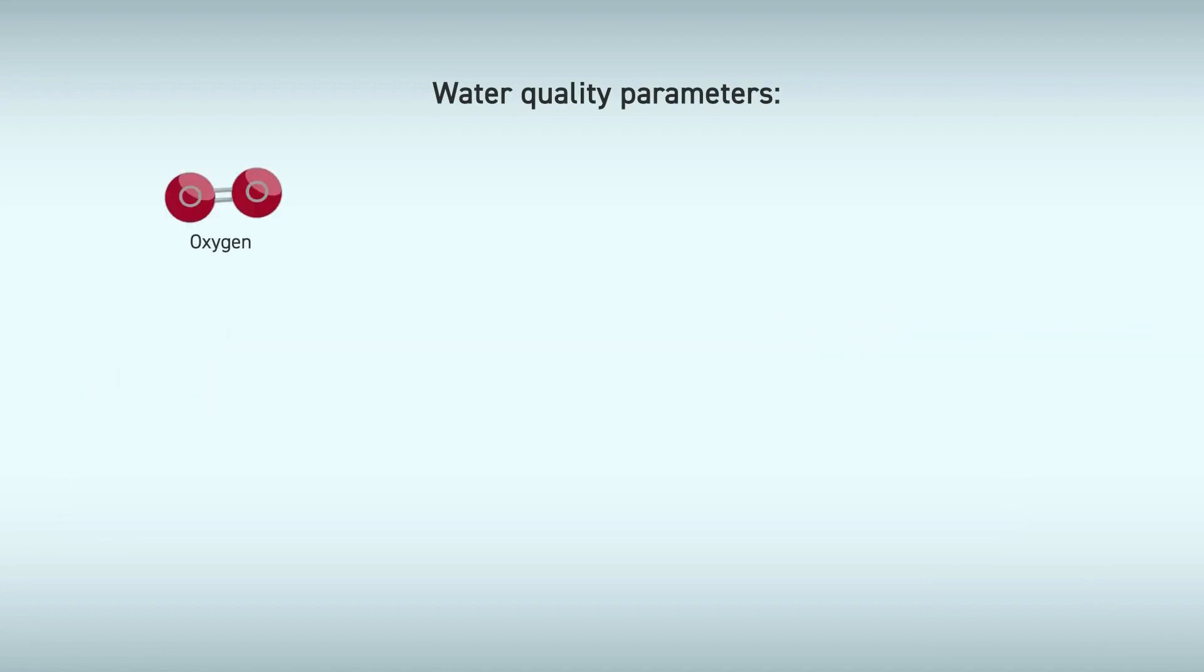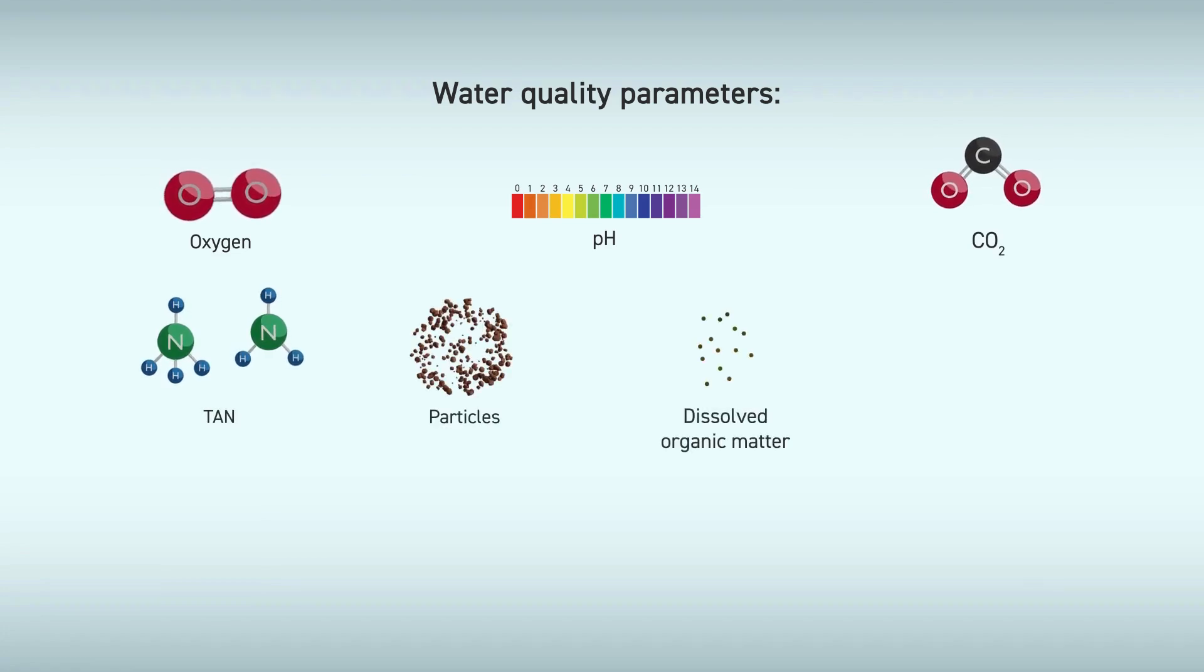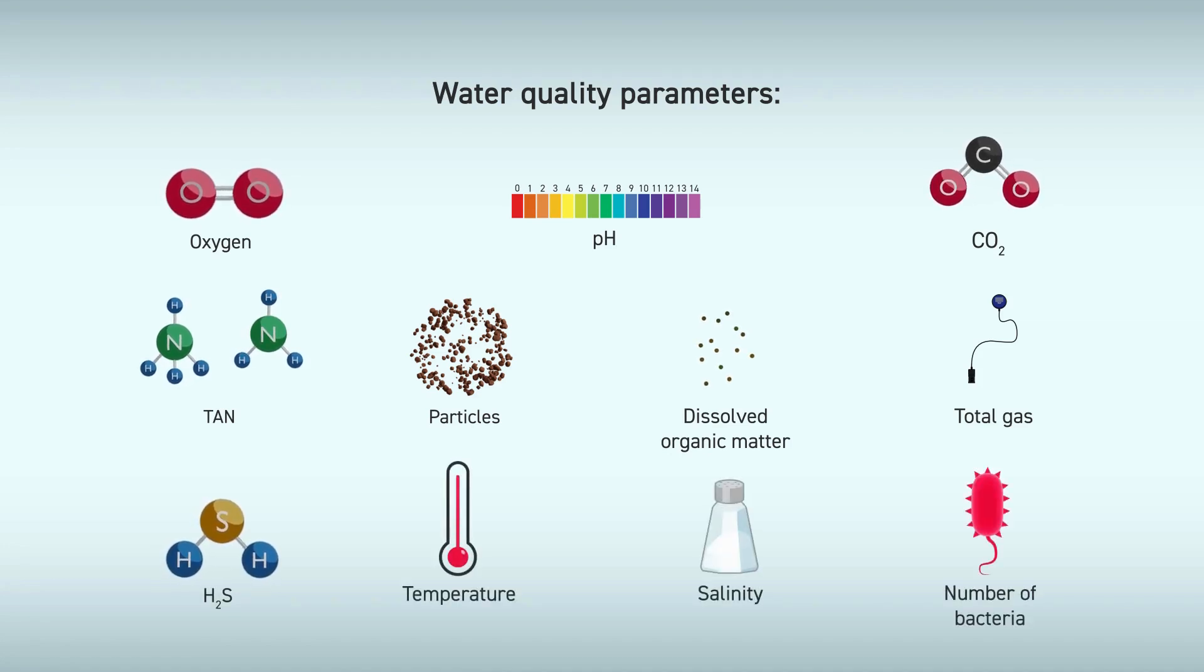Water quality parameters such as oxygen, pH, CO2, TAN, particles, dissolved organic matter, total gas, H2S, temperature, salinity, and the number of bacteria must be controlled.